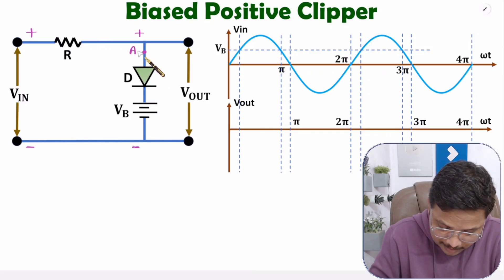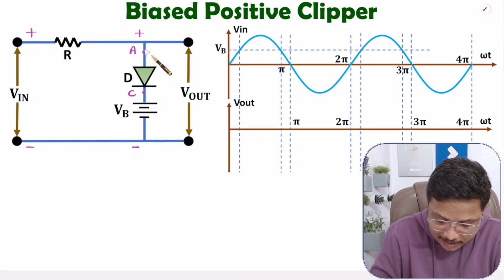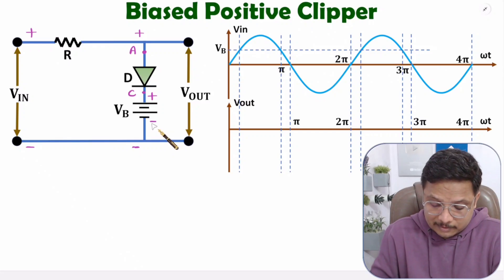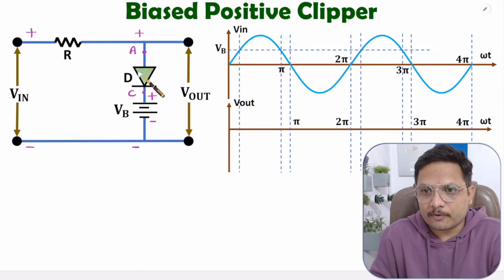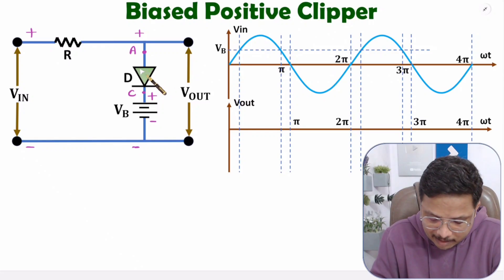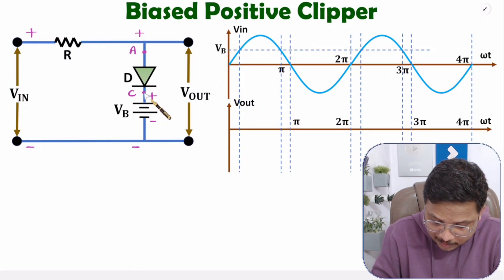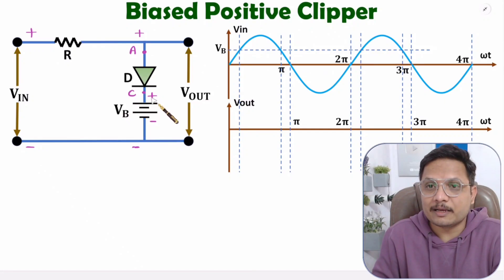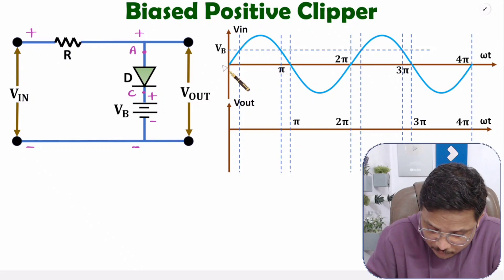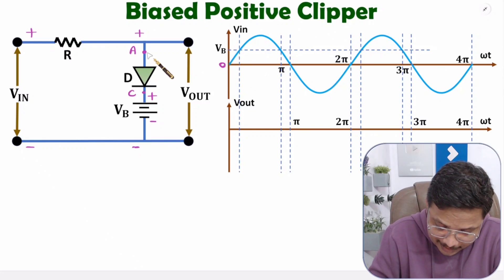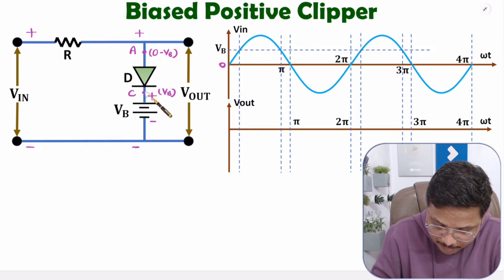So here we have the anode and here we have the cathode. In series with the diode we have a DC battery VB, that is having positive terminal here and negative terminal here. Now we need to understand first whether the diode is on or off. The diode will be on in forward bias and off in reverse bias. Here at the anode we have 0 to VB voltage, and here at the cathode we have VB voltage.